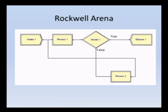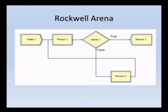Something is being decided in the decision module. If the condition being decided is true, then according to this model, that's the end of it — the entity exits the system. This is a very simple model just to show what the software's model looks like. If the condition evaluated in the decide module is false, then process two runs and the entity returns to process one.